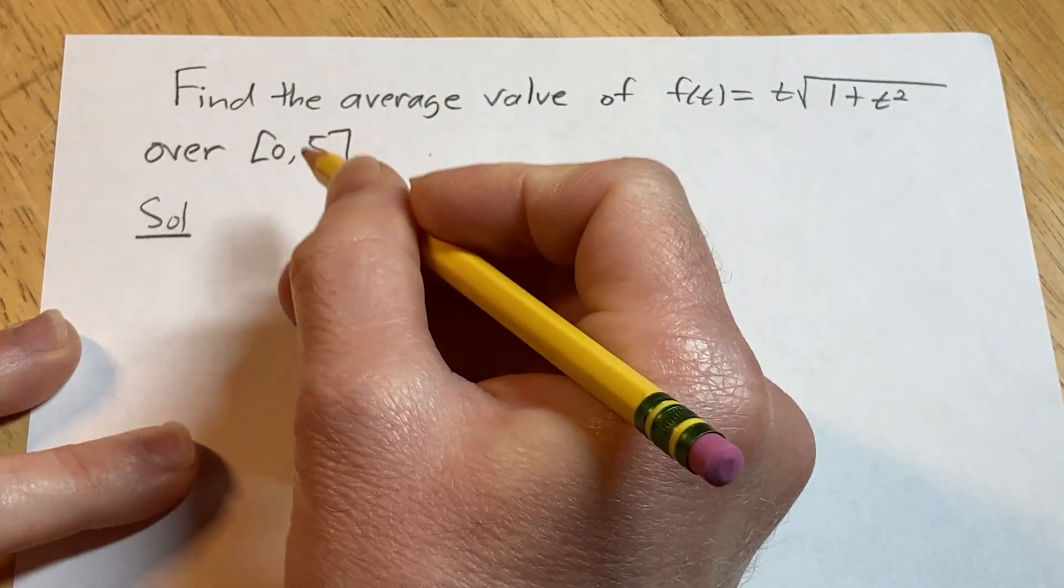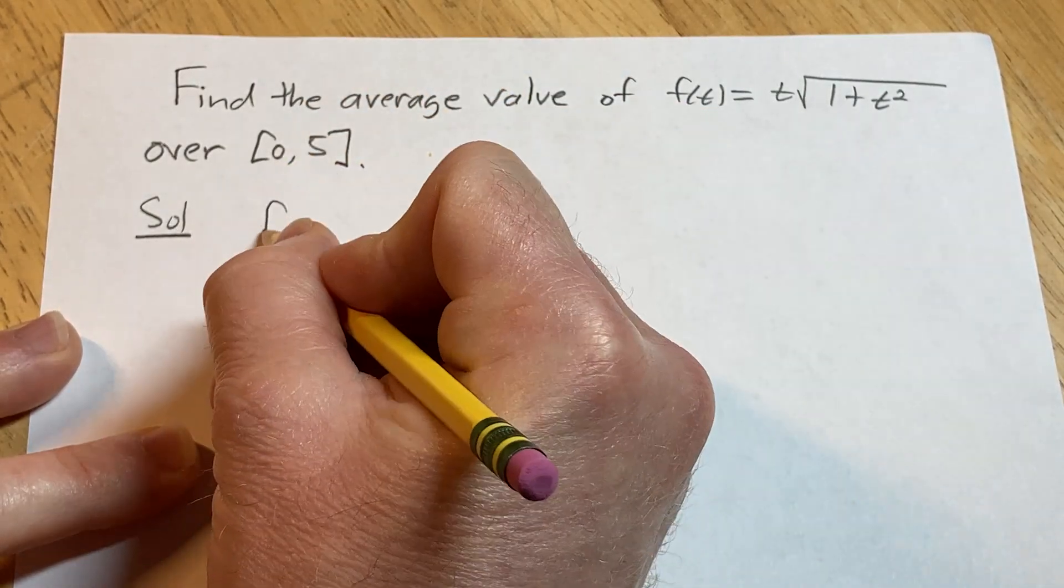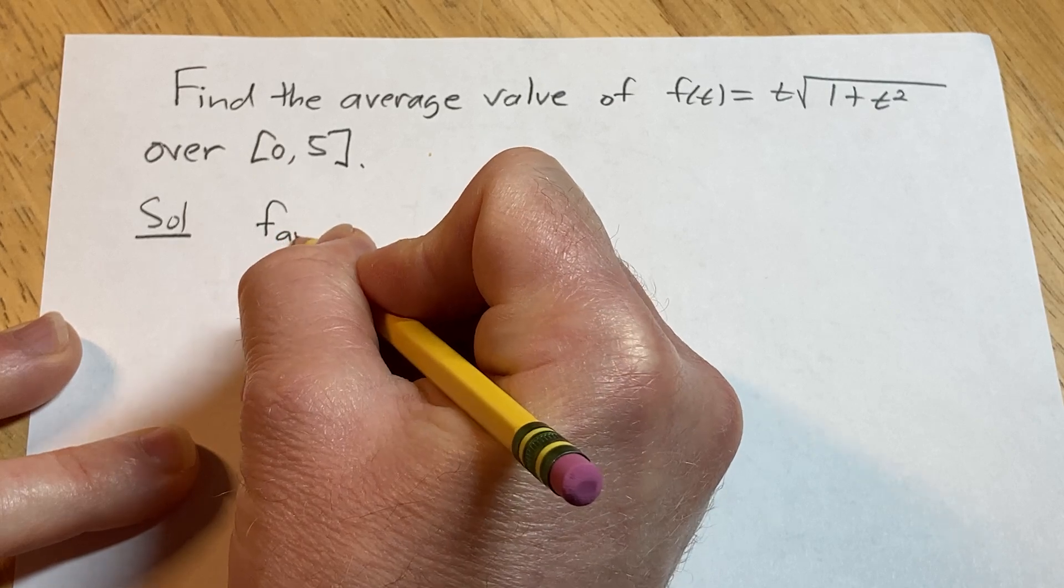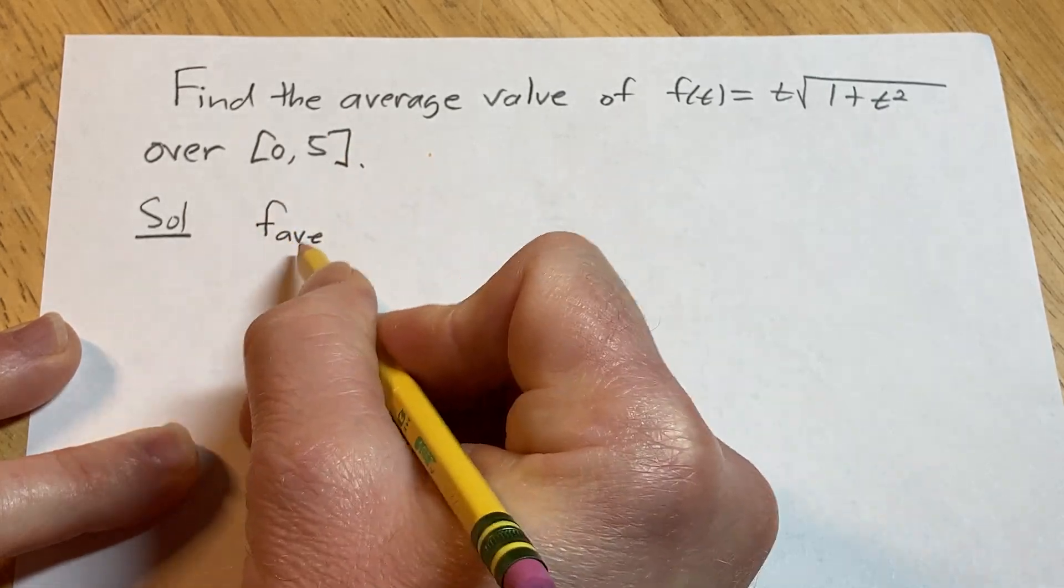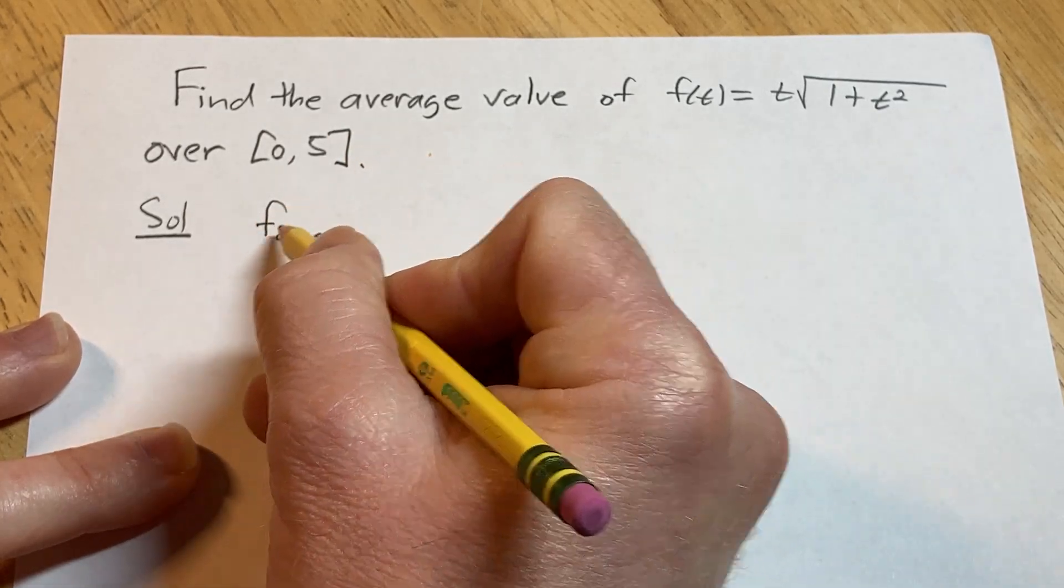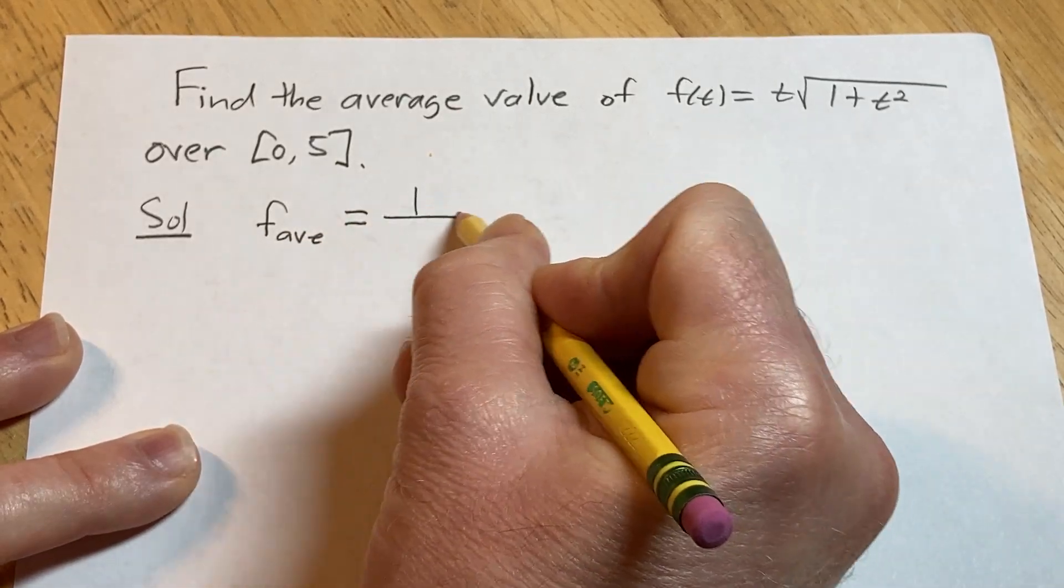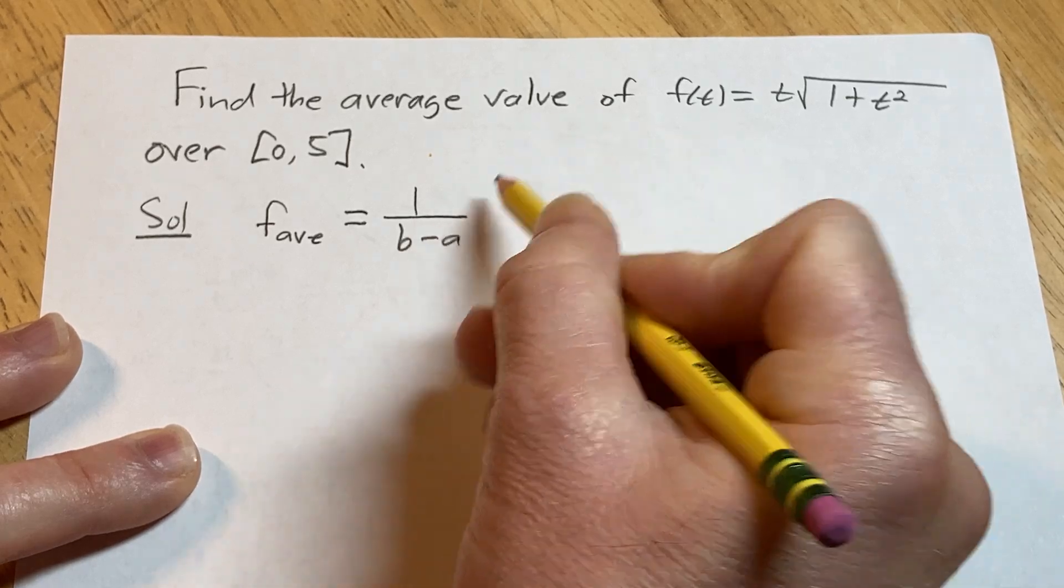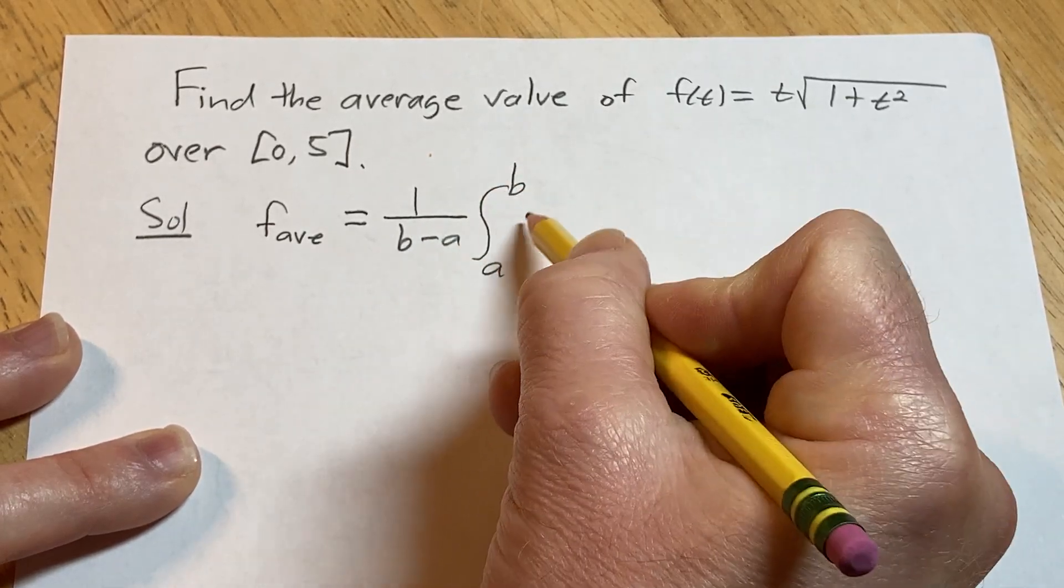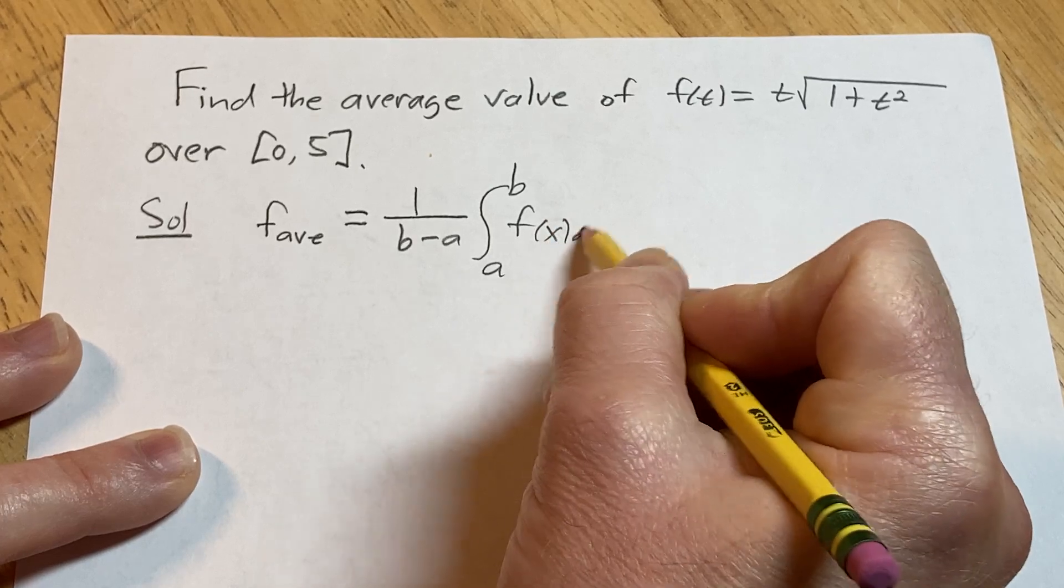We'll start by writing down the definition of the average value of a function. So the average value of a function f sub ave, so f average or average value of a function is equal to 1 over b minus a times the definite integral from a to b of f of x with respect to x.